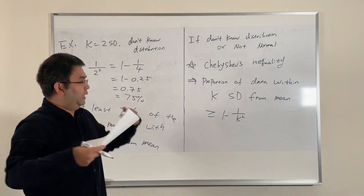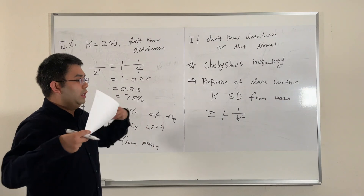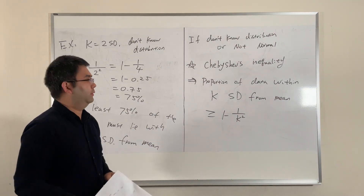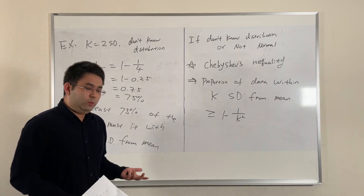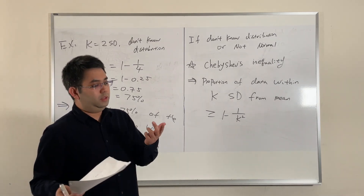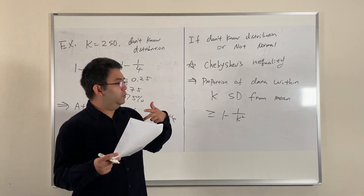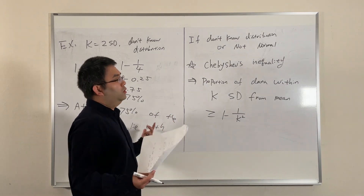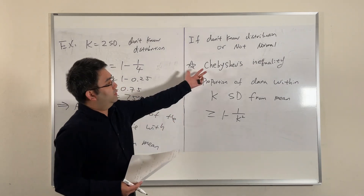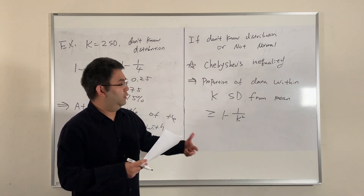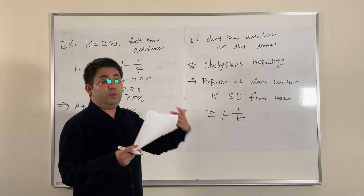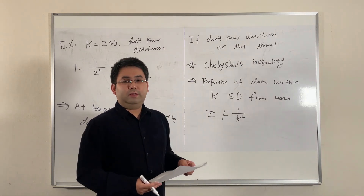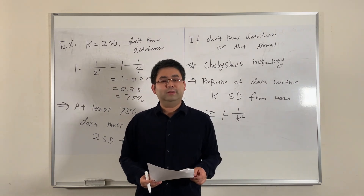Just a quick conclusion: if you have a normal distribution, use the rule of thumb. If you have a non-normal distribution or one you don't know, use Chebyshev's inequality to get an approximation of how much data is within the range of interest. That concludes this video — see you in the next one, thank you for watching.